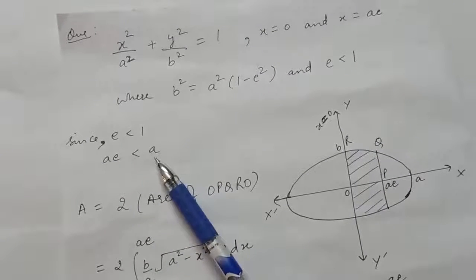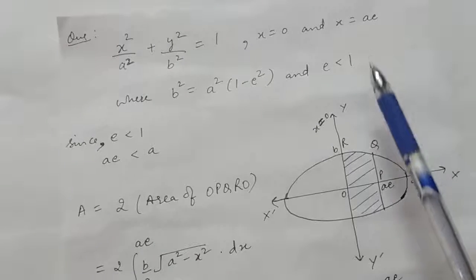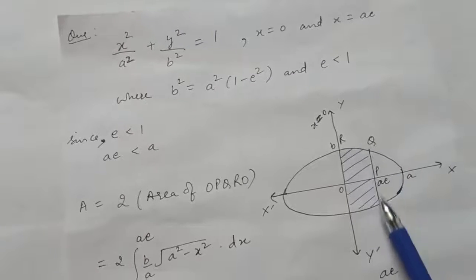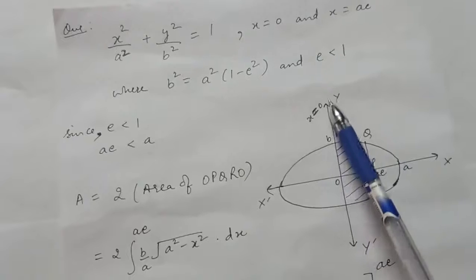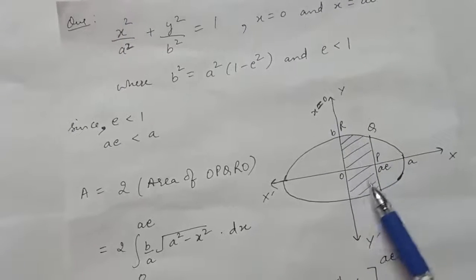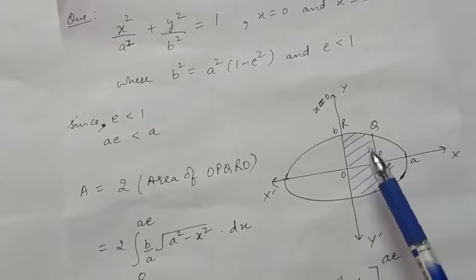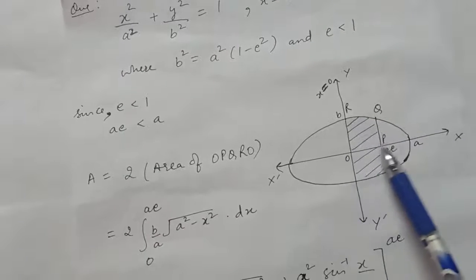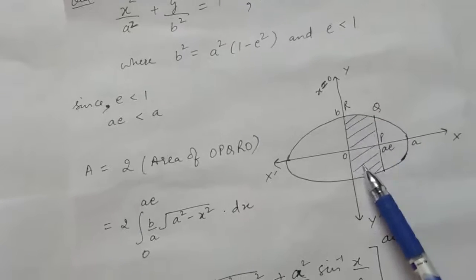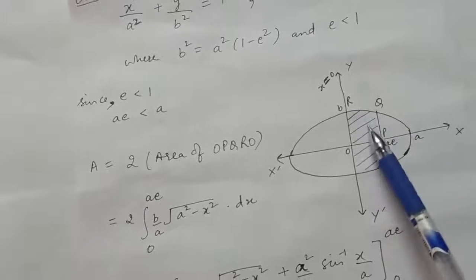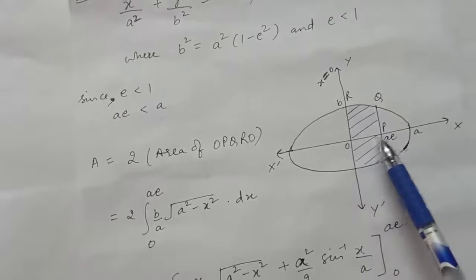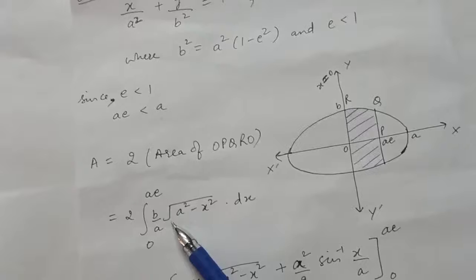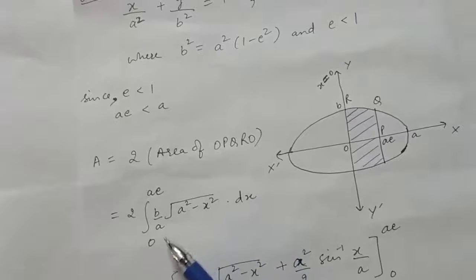The line x = ae and x = 0 bound a region. This bounded region is twice the area of OPQRO because the ellipse is symmetrical about the x-axis. The area of this region, taking limits from the x-axis, is 2 × integral of (b/a)√(a² − x²) dx with limits from 0 to ae.